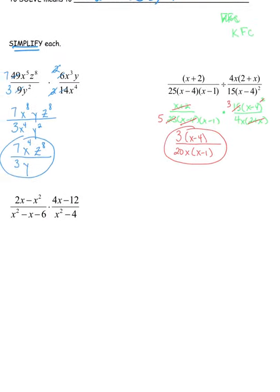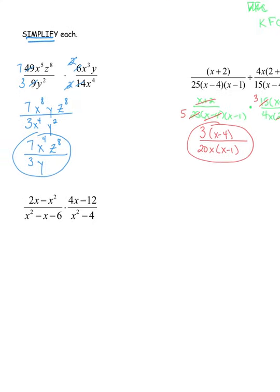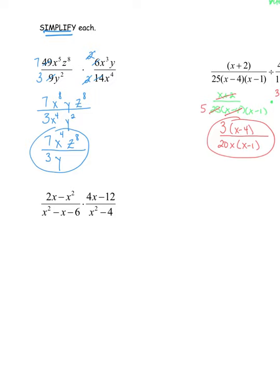We spent a couple of days with multiplying and dividing, and on the second day we got to problems where some factoring has to happen — in fact every single one of these is going to factor. For problem 3, the numerator 2x − x² has a GCF of x. Factoring out x gives x(2 − x). The denominator is a quadratic with all three terms, so I'll use the generic rectangle: x² and −6 are the first and last terms.